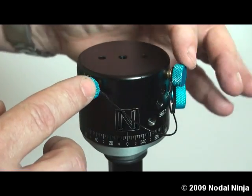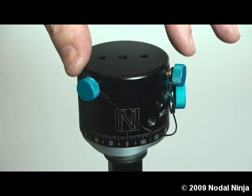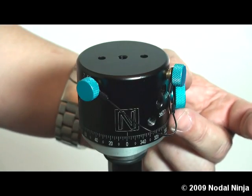We have three knurled knobs on the rotator: two smaller detent plunger knobs and one larger rotator lock knob.